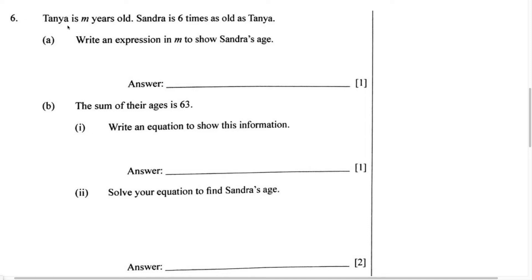Let's do this question. It says Tanya is M years old. Sandra is six times as old as Tanya. Part A: write an expression in M to show Sandra's age. Now let's read the question again. Tanya is M years old. Sandra is six times as old as Tanya.